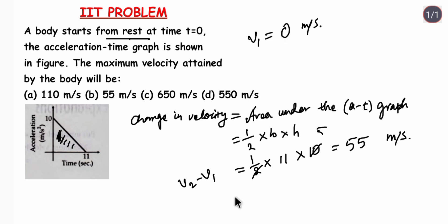So if we put this that will be v2 minus 0 equals to 55. So v2 is equal to 55 meter per second. So this is the maximum velocity that has been attained by the body. So the option b is the correct answer.